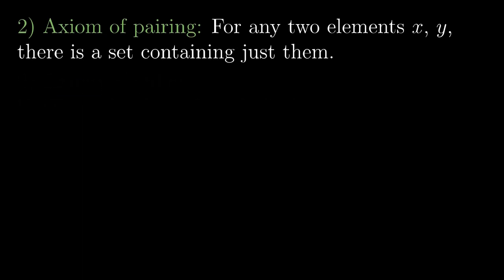The same holds for the axiom of pairing. We can apply the axiom of pairing to two identical elements. But because a set cannot contain one element twice, we actually construct a singleton set. This is the reason why we don't need an extra axiom for singletons. With this observation, we have finished the axioms allowing us to construct any finite set. Let's go on.